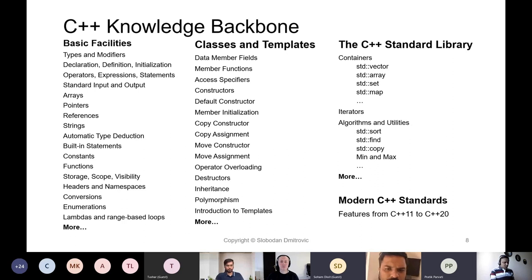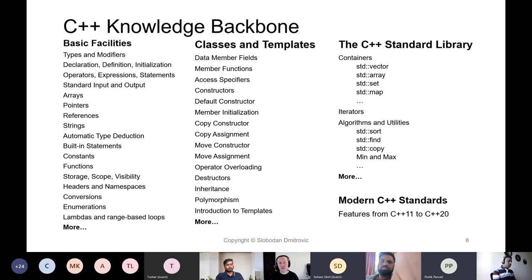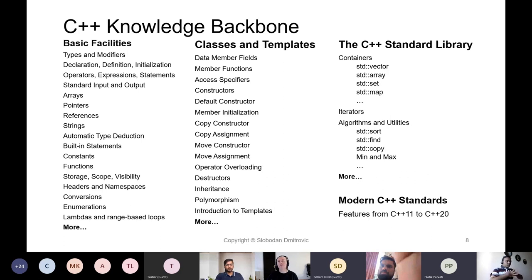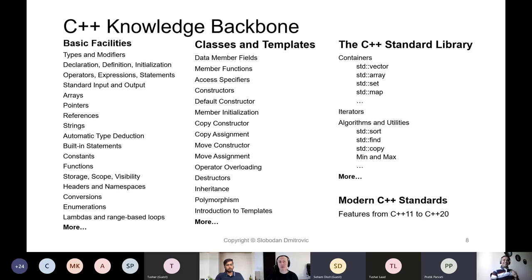Now that we know what there is to learn, let's look at some of the topics that make up the C++ knowledge backbone. The left-hand side column deals with the basic C++ language facilities. When starting to learn those things, we begin with something like a Hello World. Even a simple Hello World example in C++ could have a 15-page detailed explanation, but we should limit ourselves — it's a Hello World, and we move on.